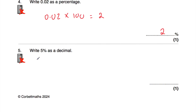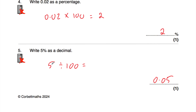Question number five says write 5% as a decimal. If we know 2% is 0.02, then 5% is going to be 0.05 — just using that logic. It's quite useful to know how to write a percentage as a decimal quickly. We could also just take the 5 and divide it by 100, moving it two columns to the right. The 5 in the units moves into the tenths and then into the hundredths, so the answer is 0.05.